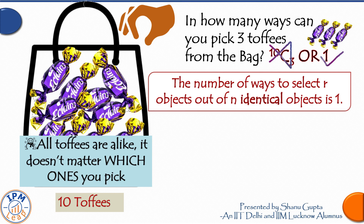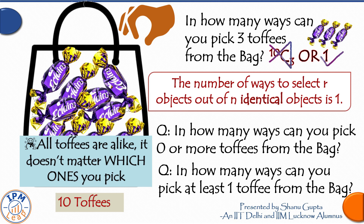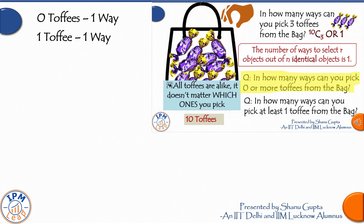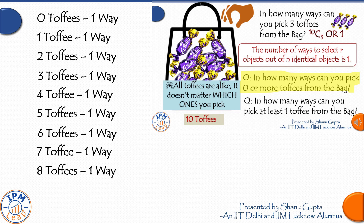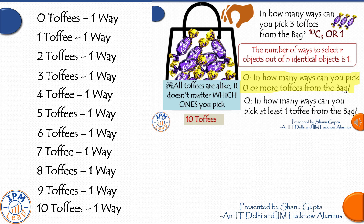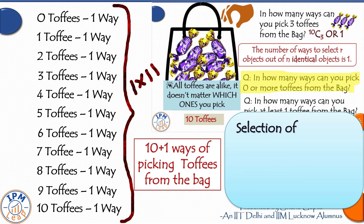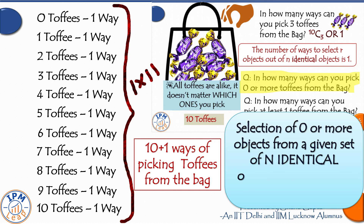Now, if you can select as many toffees as you like, how many possibilities exist? You can pick zero toffees, or one, or two, or three, up to ten. For picking any particular number, there is only one way. So the total number of ways to select zero or more toffees is 1 added eleven times, which equals 11. In general, the selection of zero or more objects from a set of n identical objects can be done in n+1 ways.